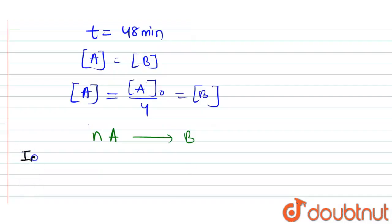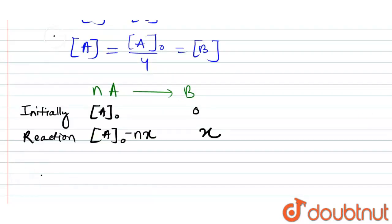Initially concentration was A naught, and at the reaction time concentration will be A naught minus nx, and here the concentration will be x.